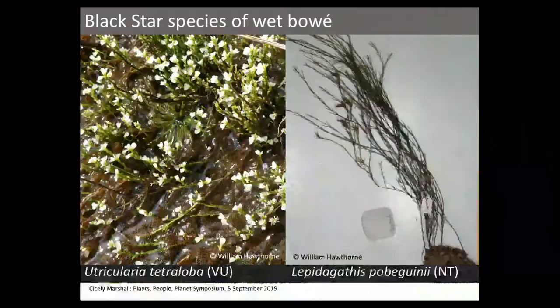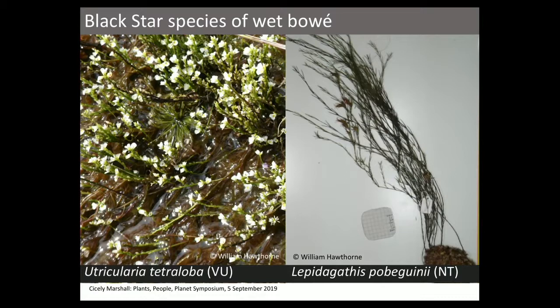Boe is an unusual habitat, and although there is a lot of it in Guinea, very little to none of it is in protected areas — yet there's a lot of interest in mining it. These two species are both black star species and have both been assessed for the Red List, thanks to the efforts of Kew Gardens' Tropical Important Plant Areas of Guinea project.